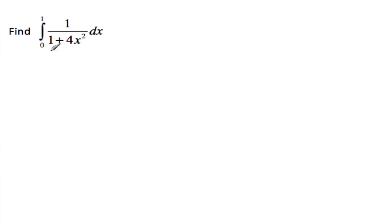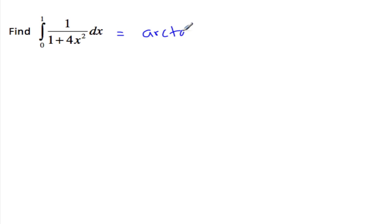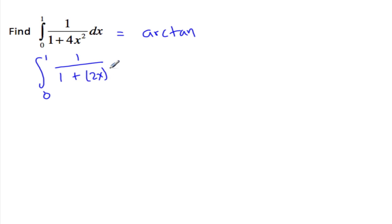We're going to run through this example: 1 over 1 plus 4x squared, integrating from 0 to 1. You should see by now that this is going to be an arctan. So this is arctan, and if I rewrite this from 0 to 1 of 1 over 1 plus 2x quantity squared, dx.